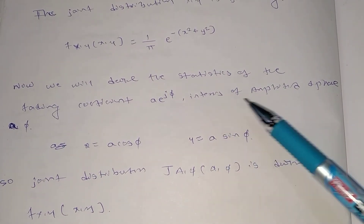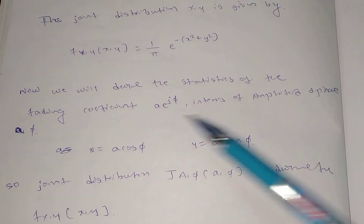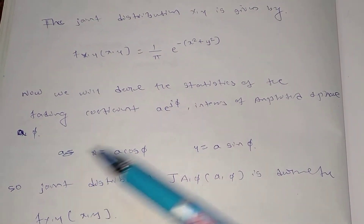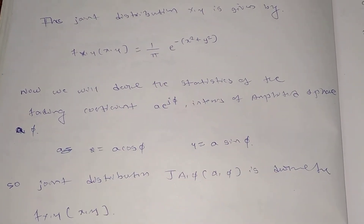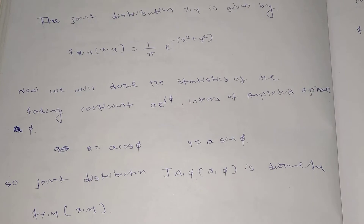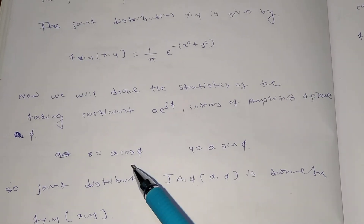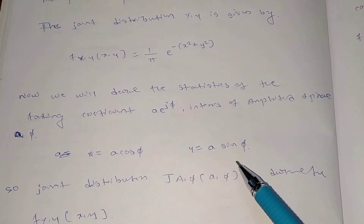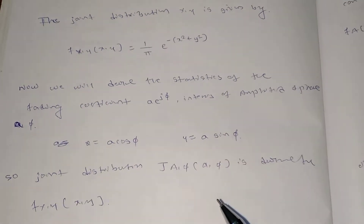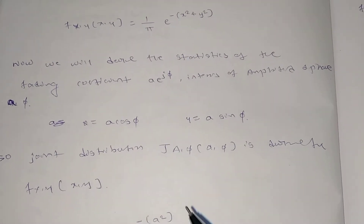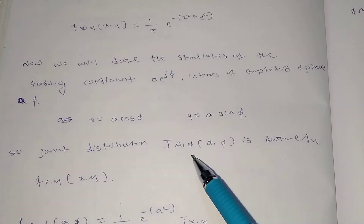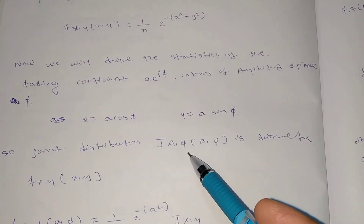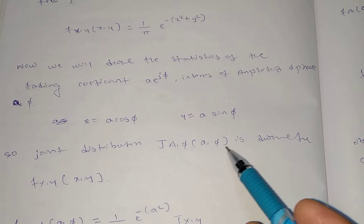Consider the coefficient a·e^(jφ) in terms of amplitude and phase, where amplitude is small a and phase is small φ. I can write x = a·cos(φ) and y = a·sin(φ). The joint distribution J(a, φ) can then be given as J(a, φ) = f(x, y) for the mapped variables.